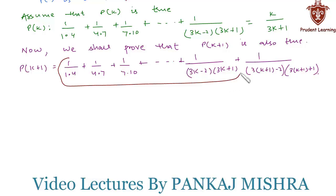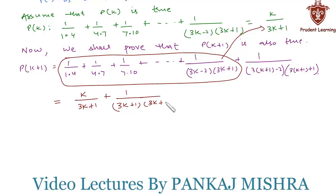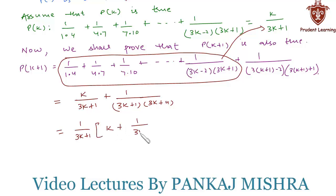We substitute the sum of the first k terms from equation 1 as k/(3k+1). This gives us k/(3k+1) + 1/((3k+1)(3k+4)). Taking 1/(3k+1) common from both terms, we get 1/(3k+1) × (k + 1/(3k+4)).